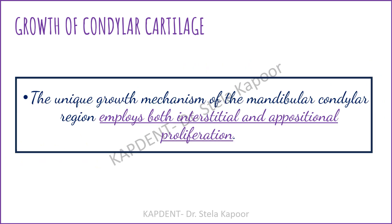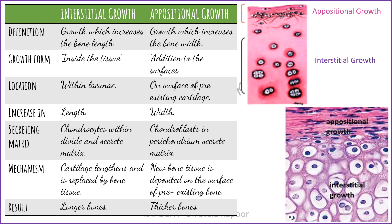An important point: the growth of condylar cartilage is a unique mechanism because it employs both interstitial and appositional proliferation. Interstitial growth increases bone length and takes place inside the tissue within lacunae, where chondrocytes divide and secrete matrix. Appositional growth increases bony width and takes place on the surface of pre-existing cartilage, where chondroblasts and the perichondrium secrete the matrix. Interstitial growth results in longer bones, while appositional growth results in thicker bones.